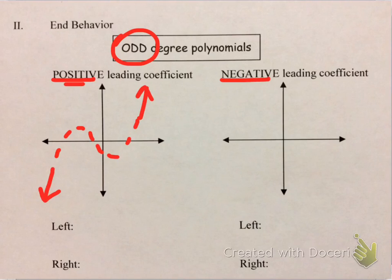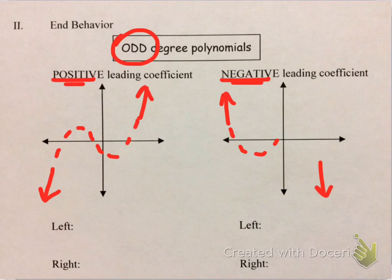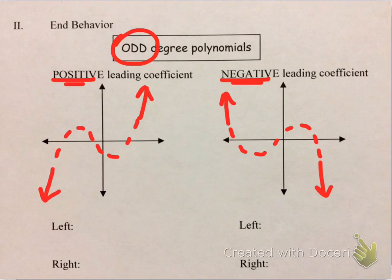Whereas if the leading coefficient is negative, the graph starts out pointing up but ends pointing down. I'll make the middle dotted, indicating I'm not sure what it looks like, but I know for a fact the ends will look like this.